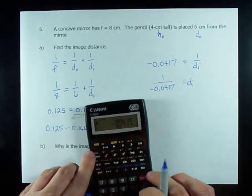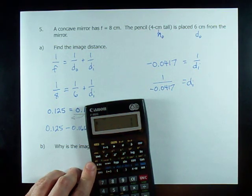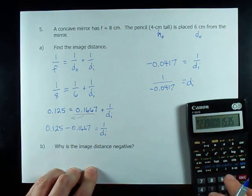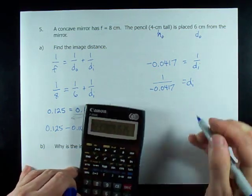So, 1 divided by 0.0417, and make sure it's negative, gives me 23.98.